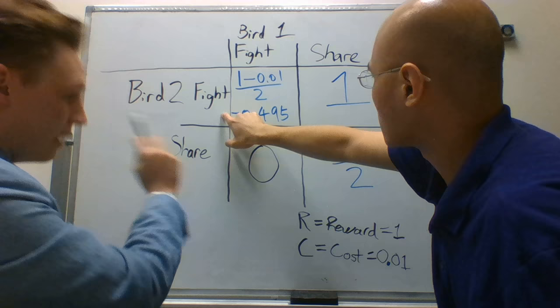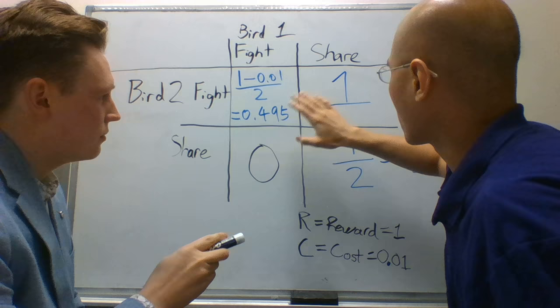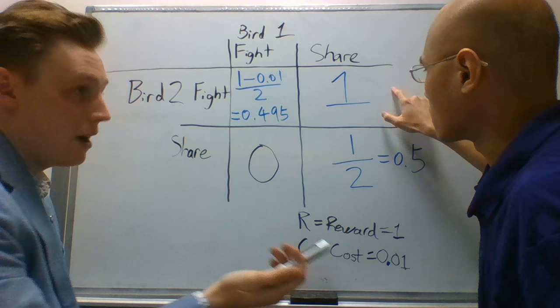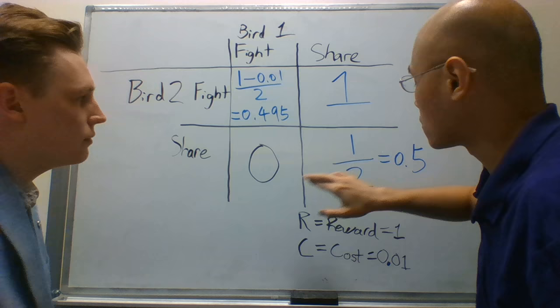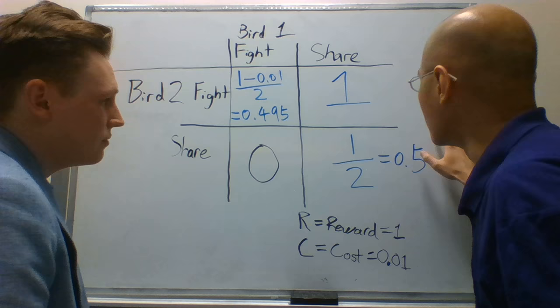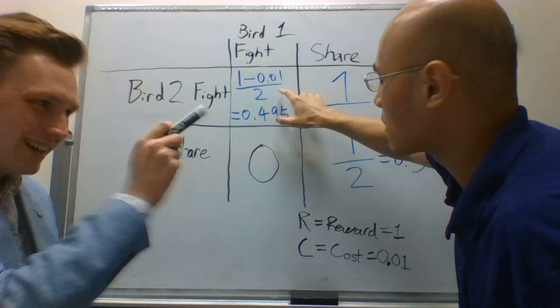If bird two chooses to fight, at the very minimum you'll get roughly 0.5, and at the maximum you can get 1. Whereas if you share, regardless of what bird one does, at the minimum you can get zero and at most you can get 0.5. So the dominant strategy for bird number two would be to fight. This is the low cost scenario.